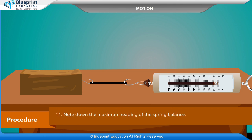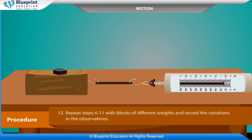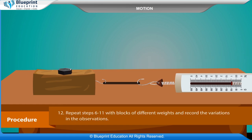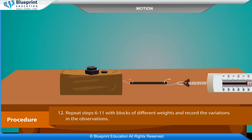Note down the maximum reading of the spring balance. Repeat the steps with blocks of different weights and record the variations in the observations.